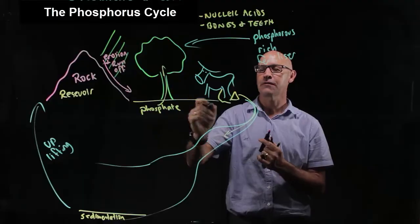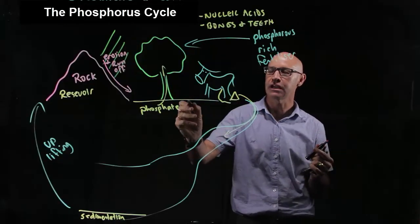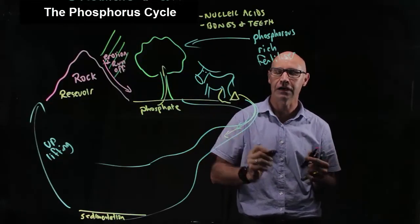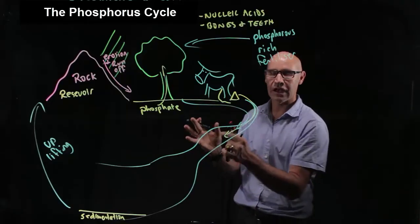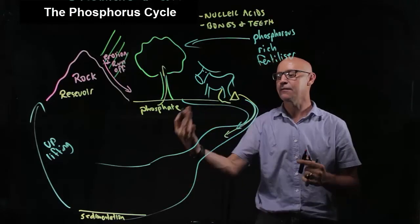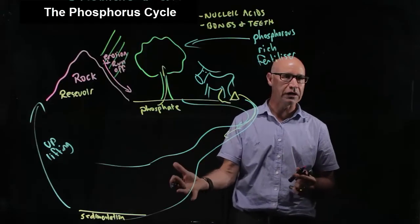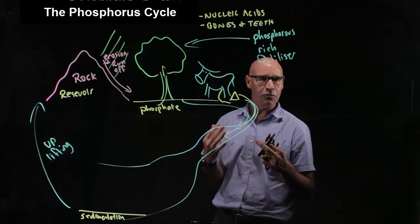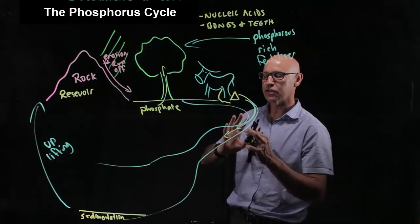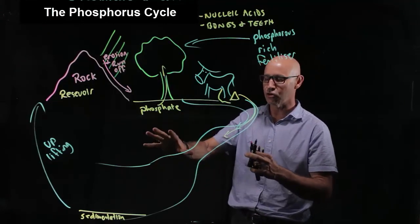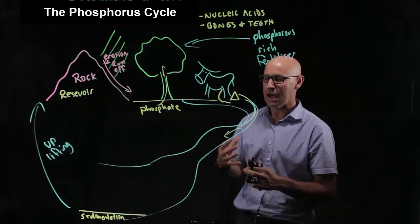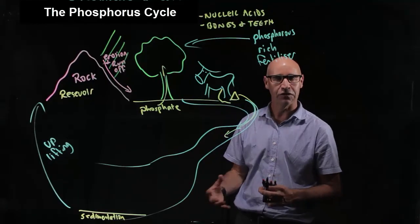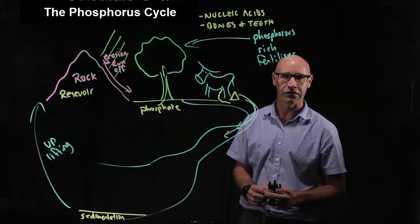But of course, we have the same issues we had with nitrogen in that we have runoff down into waterways and contamination. We have increased nutrients in the waterways, so we have eutrophication occurring. As well as that, we have contamination that causes damage to marine ecosystems like the Great Barrier Reef, for example.